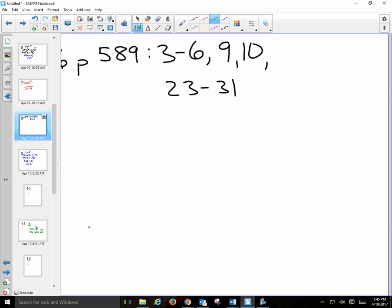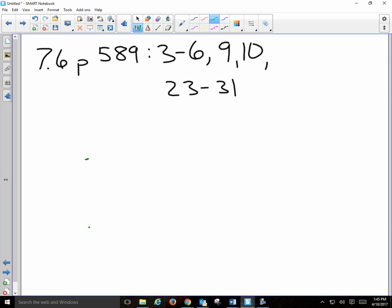We expect that behavior from some students, but not from all students. I was talking about Elena. Elena, stop swearing in class. Gosh. 7.6, page 589. 589, is that a perfect square? No, it isn't. So 3 through 6, 9, 10, and then 23 through 31. Make sure you know how to do this. If you do not know how to do 23 through 31 after today, you need to come and see me and learn how to do that. If you can't do problems 23 through 31, this test could be a disaster.